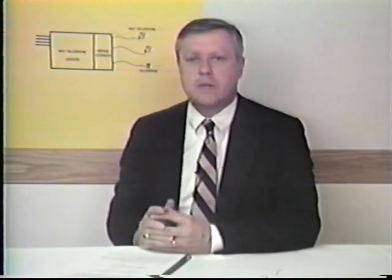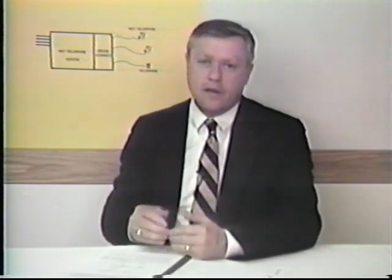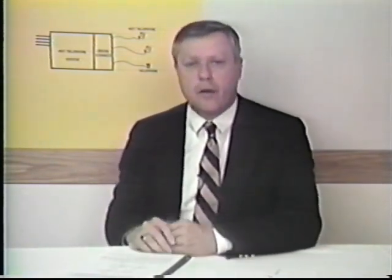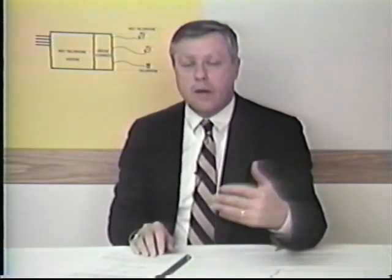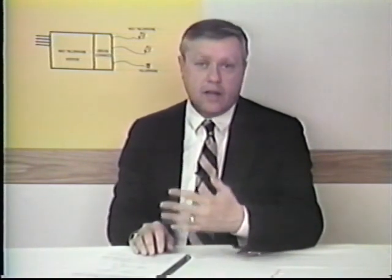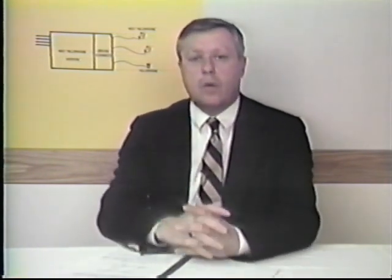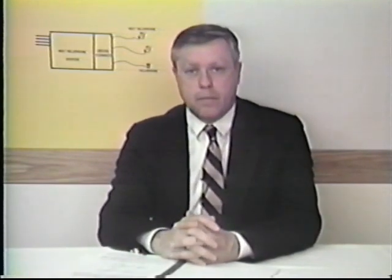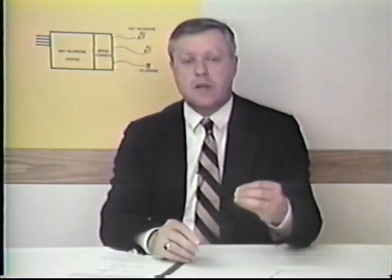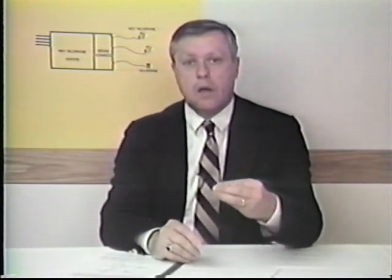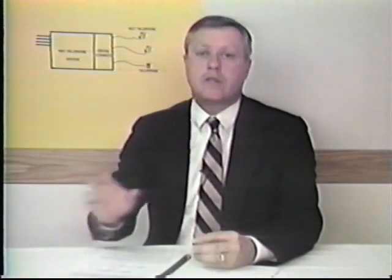Key telephone systems are what we call square systems — so many lines in, so many stations out. Lines come in and ring on specific sets or telephones. The problem with the key telephone system is if you went to a large company, you couldn't use that type of arrangement. You would need some way where calls come in, go through a central point, and then are distributed to many hundreds of telephones.